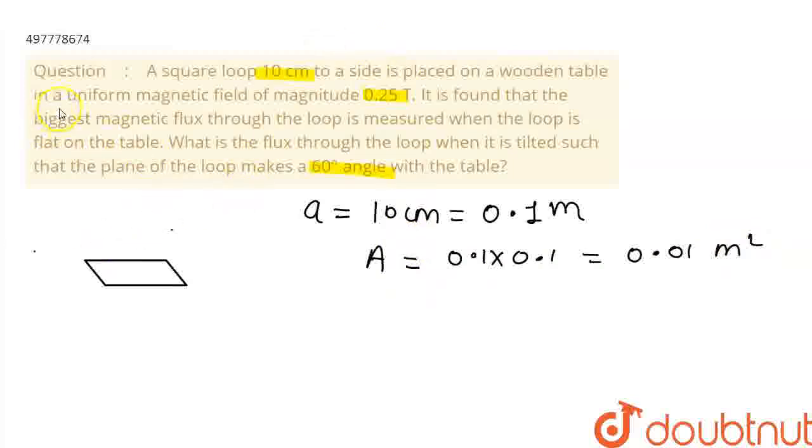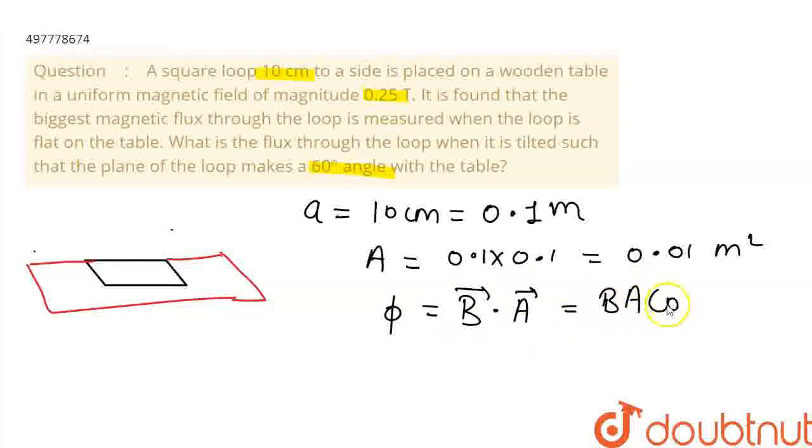Phi equals B dot A equals BA cos theta. Theta is the angle between B and A.